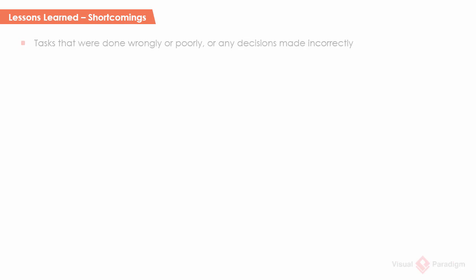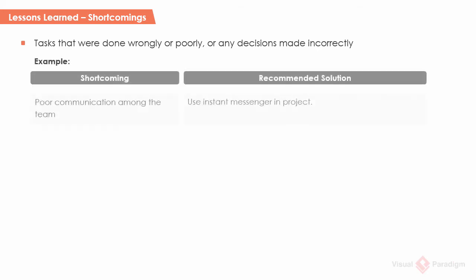Shortcomings are tasks that were done wrongly or poorly, or any decisions made incorrectly. It's sometimes confused with challenge and difficulty, but it is neither. Challenges and difficulties are adverse situations that required resolving in order for the project to complete, while shortcomings are faults and failures. For example: the team failed to communicate effectively, which is obviously a failure. A recommended solution must be made — in this case, it's advised that an instant messenger can be used.